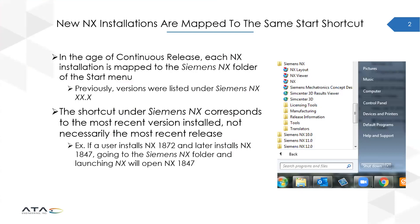I'd like to start off by sharing that new NX installations are mapped to the same start shortcut folder. So in this age of continuous release, where we aren't really referring to new versions of NX by their version number anymore, we just get a single Siemens NX folder inside our start menu. Previously we might have had NX 10, NX 11, NX 12 — now we just have Siemens NX.